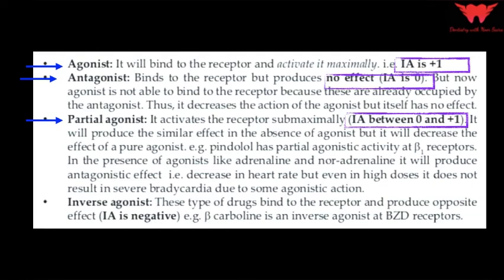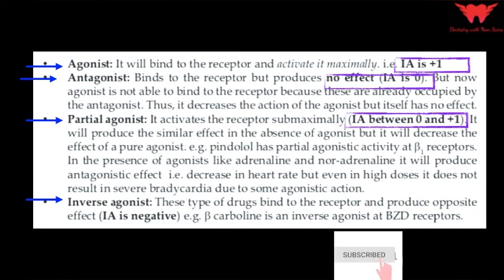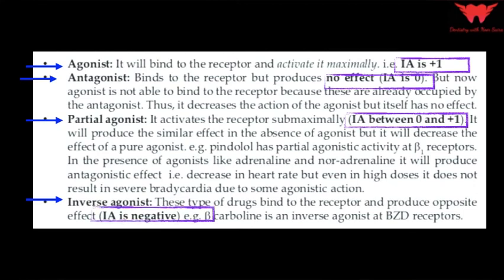An inverse agonist binds to the receptor and produces the opposite effect — not the effect we wanted, but a negative effect, so its intrinsic activity goes into the negative. To summarize: an agonist binds and activates maximally (intrinsic activity +1); an antagonist brings no effect (intrinsic activity 0); a partial agonist brings about half the activity of an agonist (between 0 and +1); and an inverse agonist brings about the opposite effect, so its intrinsic activity is negative.